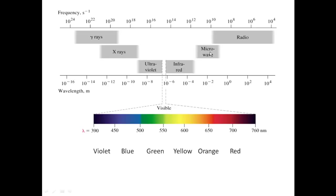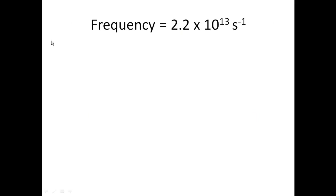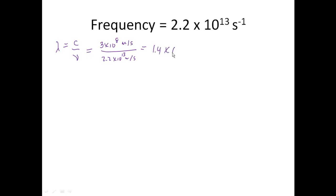Looks like we're on number 6: 2.2 times 10 to the 13th cycles per second. Let's look at what that is — 10 to the 13th in frequency looks like it's going to be infrared. So we're going to go and make sure by calculating our wavelength. Our wavelength is c divided by nu, and I'm going to calculate this one in meters. So it's 3 times 10 to the 8th meters per second divided by 2.2 times 10 to the 13th. And when I do that math, I come up with 1.4 times 10 to the minus 5th.